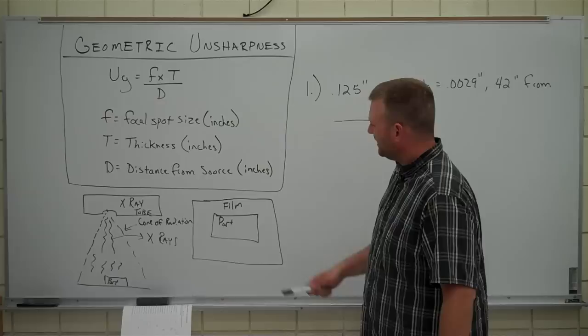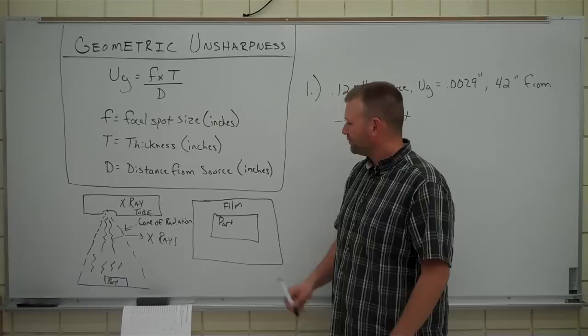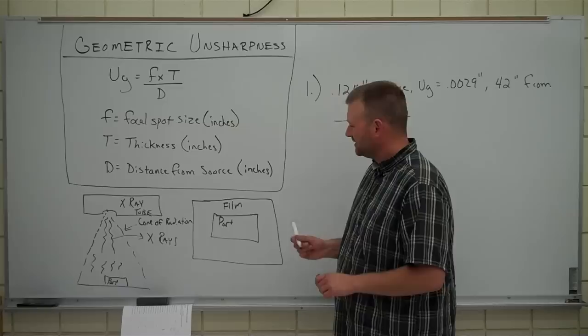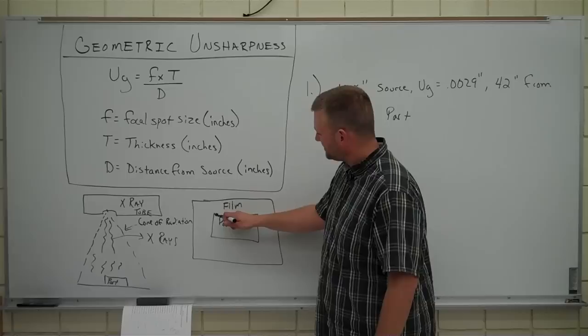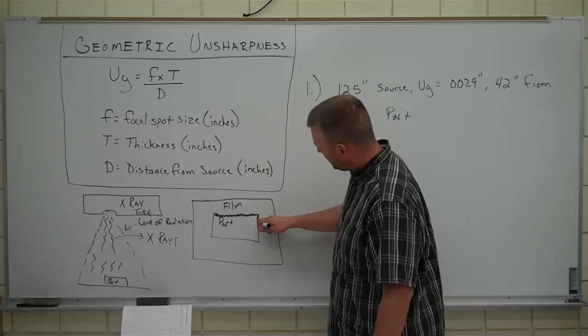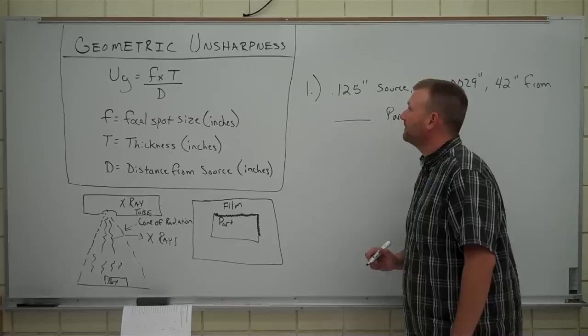So, if you can imagine this right here, being your piece of film, doesn't matter what kind of film that is, place your part in the middle. Working with geometric unsharpness here, what happens is, since we said it was going to be a little bit fuzzy, the unsharpness factor comes in around the outside of this, where the outside of this image is going to be just a little bit fuzzy. You saw that in your RT1 reading, and I draw that all the way around with this.